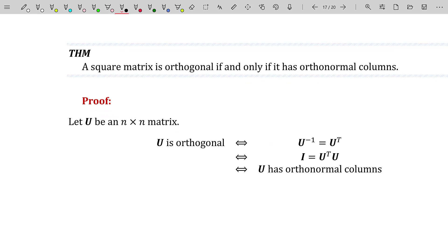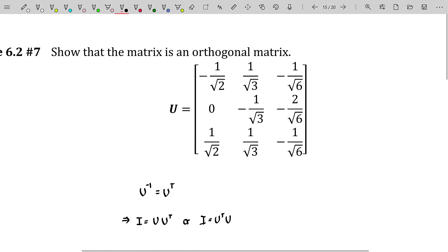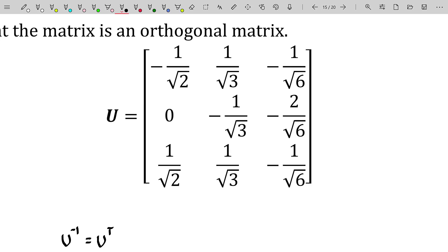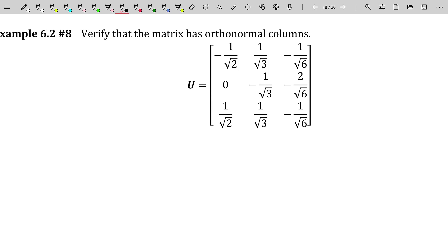The proof follows directly: U is orthogonal if and only if U inverse equals U transpose (by definition), if and only if U transpose times U equals I, if and only if U has orthonormal columns (by the previous theorem). That is exactly why our very first example — the orthogonal matrix — had terrible-looking columns: the norm of each column must be one. Take the norms of each of those columns and they are all one.